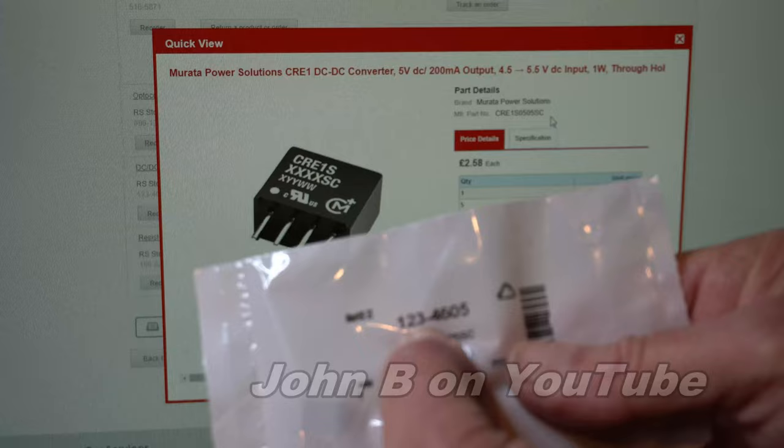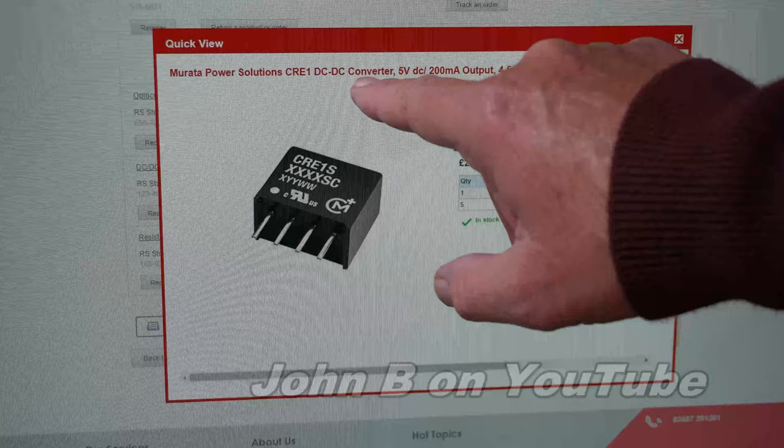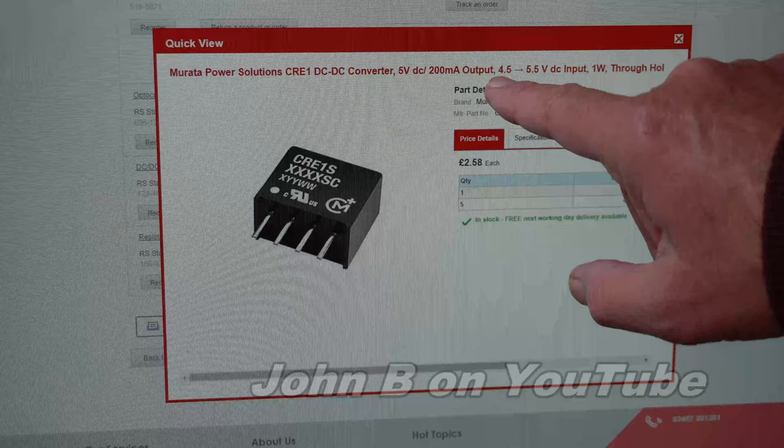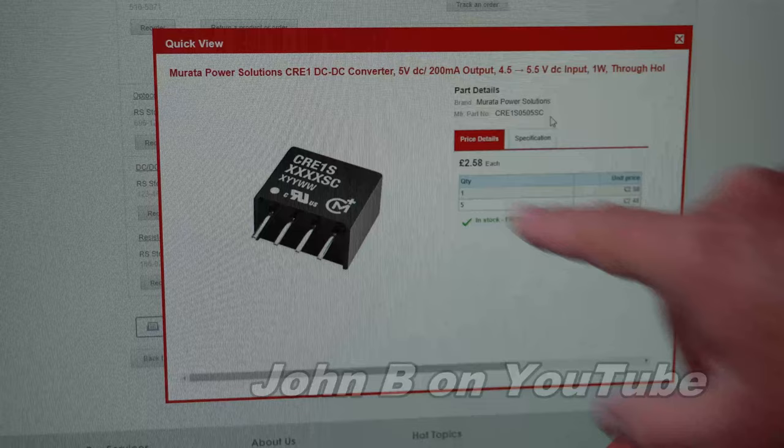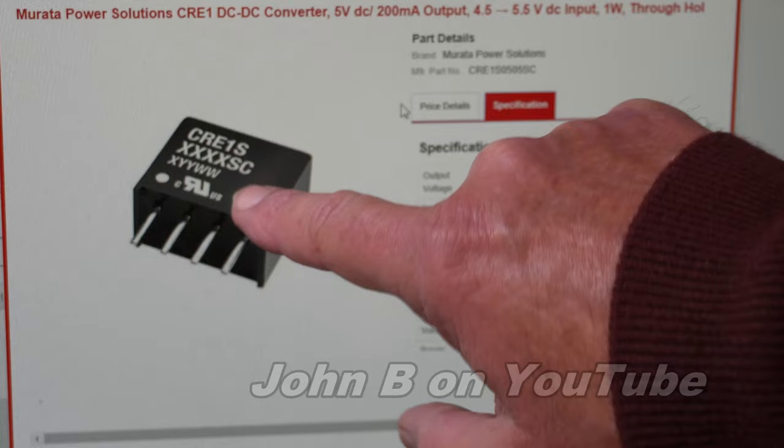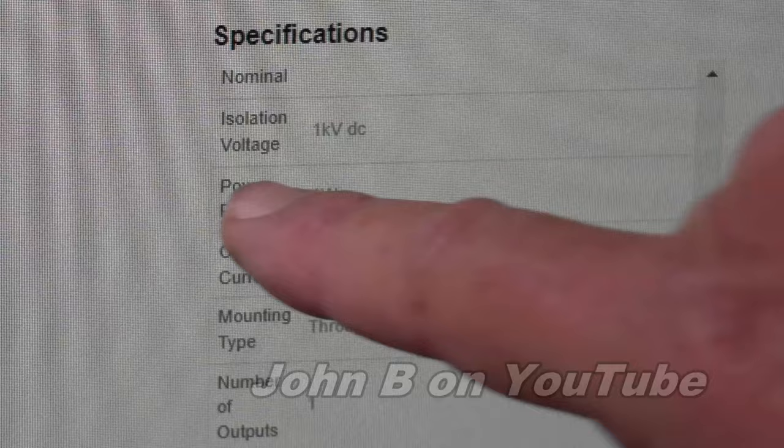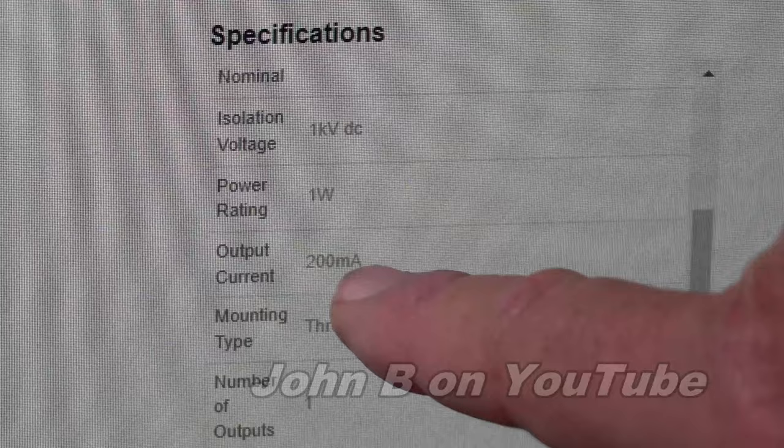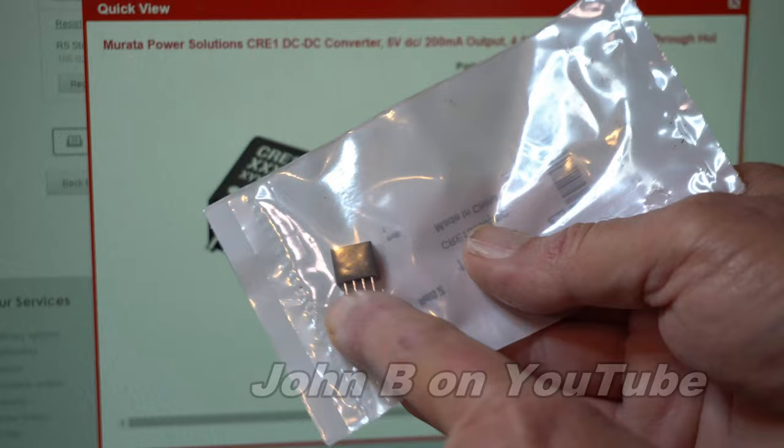Right, so this device, RS part number 123 4605 is this. It's a Murata power supply solution. It's DC to DC converter, 5 volts DC, 200 milliamp output, 4.5 to 5.5 DC input, 1 watt. So just a couple of hundred milliamps. I thought what if I had five of these, but they're £2.58 each plus the VAT. I've only wasted money on these, or potentially. The advantage with this DC to DC converter is, if I scroll down, isolation. The isolation voltage, 1 kilovolt DC. So there's the output current, 200 milliamps, through the hole. So the efficiency isn't great, 70%, but what do I expect for £2.58?